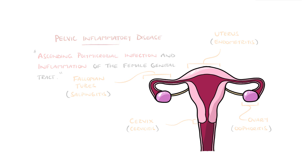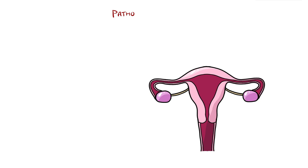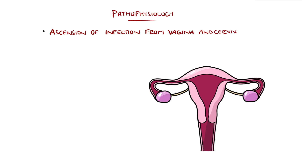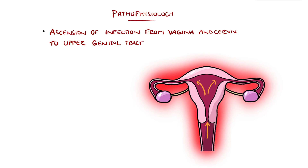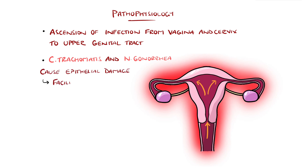The pathophysiology involves infection from the vagina and cervix ascending into the upper genital tract. Often this is facilitated by epithelial damage by organisms like Chlamydia trachomatis or Neisseria gonorrhea,